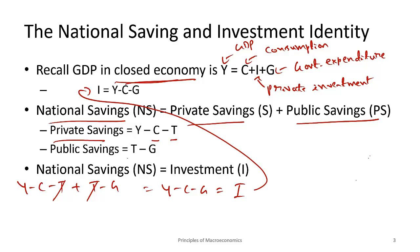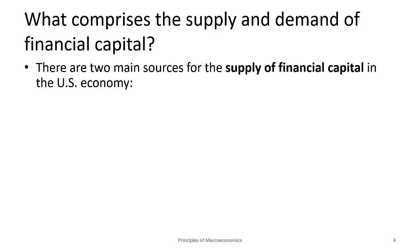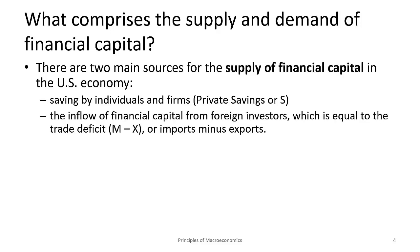However, the real world is much more complicated. Until now we discussed a closed economy, but in real life we do trade with other parts of the world. The question is how those things impact the supply and demand of foreign capital. Let's focus on the supply of financial capital — from where does all the money used for investment come from? One source is our private savings: money saved in bank accounts, retirement accounts, stocks, and bonds. Another source is foreign capital, which comes from the trade deficit.